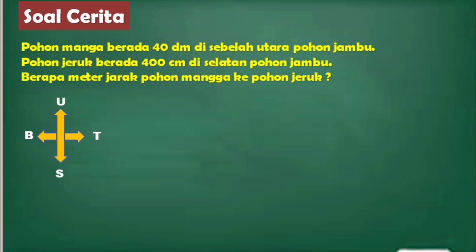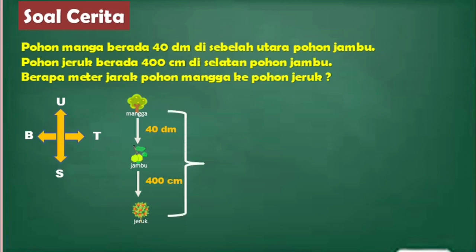Karena pohon mangga berada di sebelah utara pohon jambu, berarti kita letakkan pohon mangga di sebelah utara, baru jambu, sejauh 40 desimeter. Kemudian pohon jeruk berada 400 cm di selatan pohon jambu, berarti kita letakkan di sebelah selatan dari pohon jambu sejauh 400 cm. Jarak dari pohon mangga ke pohon jeruk berarti kita jumlahkan: 40 desimeter ditambah 400 cm sama dengan berapa meter?